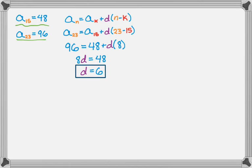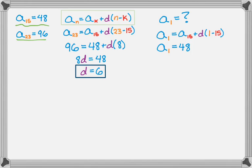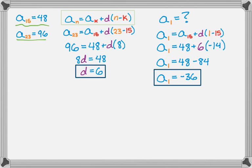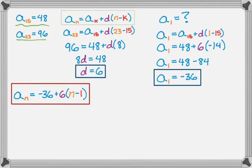Now I can figure out a₁. I'm going to go back to the equation and plug in what I know. So a₁ = a₁₅ + d(1-15). Going backwards means I'll get a negative. Plugging in, a₁ = 48 + 6(-14) = 48 - 84 = -36. From there, I can write my sequence.